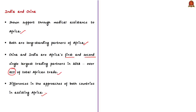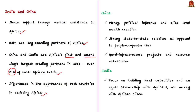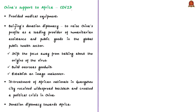For China, three aspects are critical: money, political influence and elite-level wealth creation; strong state-to-state relations; and hard infrastructure projects and resource extraction. In complete contrast, India's approach focuses on people-to-people ties, building local capacities, and an equal partnership with Africans — not merely with the elite people of Africa. Let us first see how China supported the African continent during the pandemic.